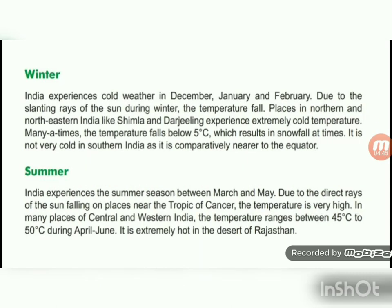India experiences cold weather in December, January, and February. Due to the slanting rays of the sun during winter, the temperature falls. Places in northern and northeastern India like Shimla and Darjeeling experience extremely cold temperatures. Many times the temperature falls below 5 degrees Celsius, which results in snowfall at times. It is not very cold in southern India as it is comparatively nearer to the equator.